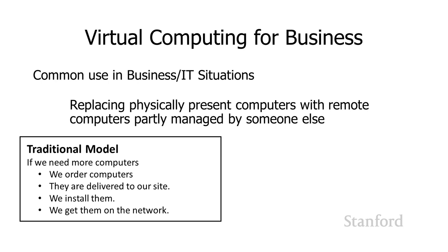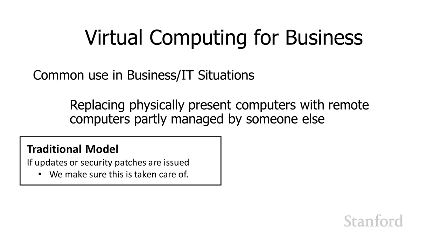Under the traditional model, if we need more computers, we order them, wait for them to arrive, get them delivered to our site, set them up, get them on the network, and make sure everything's working properly. And if there are updates or security patches issued for software or the operating system, we need to make sure that's taken care of — we are responsible for all the security.